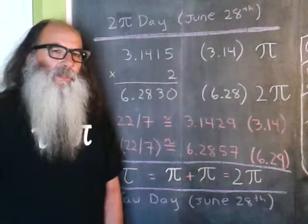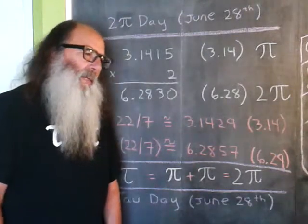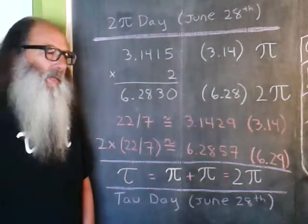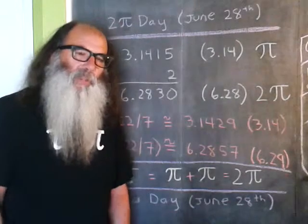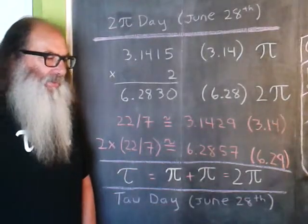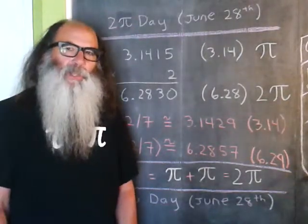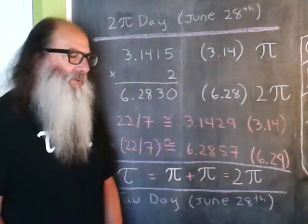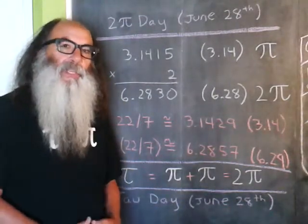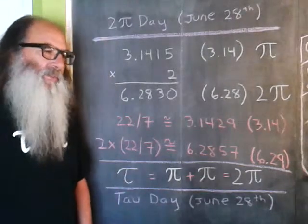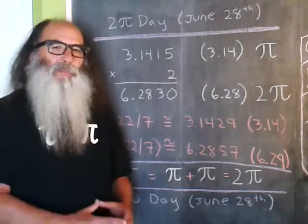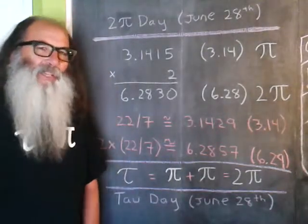Well, every year on July 22nd—July being month number 7—that day is treated as π approximation day. That's especially true in parts of the world that use day-month date format, because then it's 22/7.